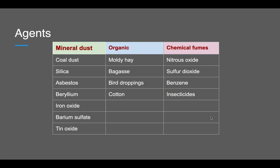The substances causing pneumoconiosis can be mineral dusts, organic materials, or certain chemical fumes. Among mineral dusts, the most important are coal dust — which leads to coal worker's pneumoconiosis — silica, and asbestos. Others include beryllium, iron oxide, and barium sulphate. Organic causes include moldy hay, bagasse, and bird droppings.